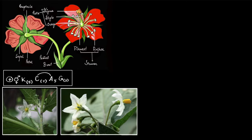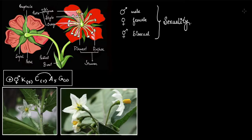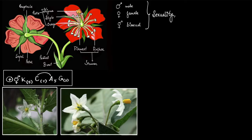The first symbol tells you about the sexuality of the flower. The male symbol means a male flower, the female symbol means a female flower, and the bisexual symbol means it is a bisexual flower. Looking at this floral formula, you can see this flower is bisexual.